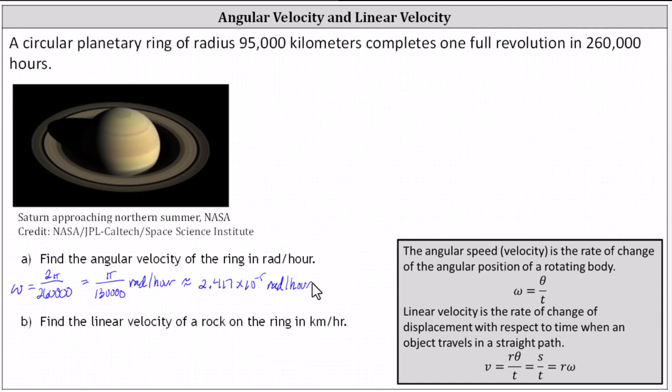Now let's find the linear velocity of a rock on the ring in kilometers per hour. Because we just found the angular velocity omega, we will use the linear velocity formula v equals the radius r times omega, the angular velocity. The radius is equal to 95,000 kilometers.